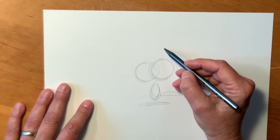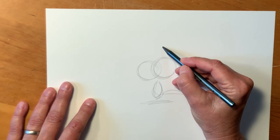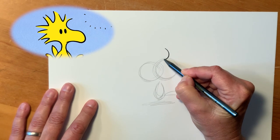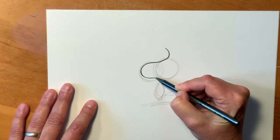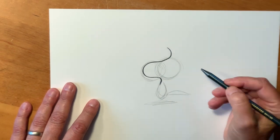The funny characteristic about Woodstock is his head feathers. So he has this one really big head feather that comes down the front and sort of makes the front of his head, and that's his neck. So you've got this one really nice curvy line, you're sort of following your circles.